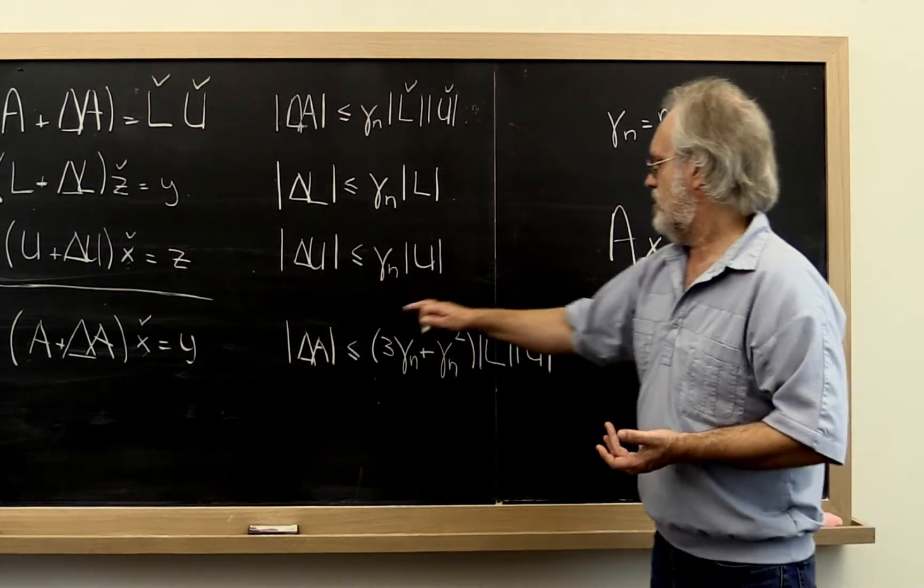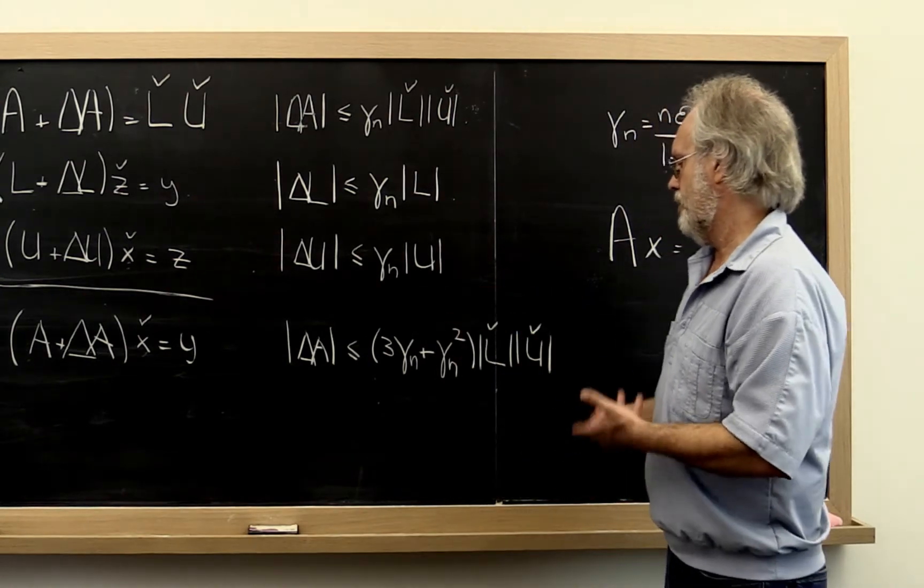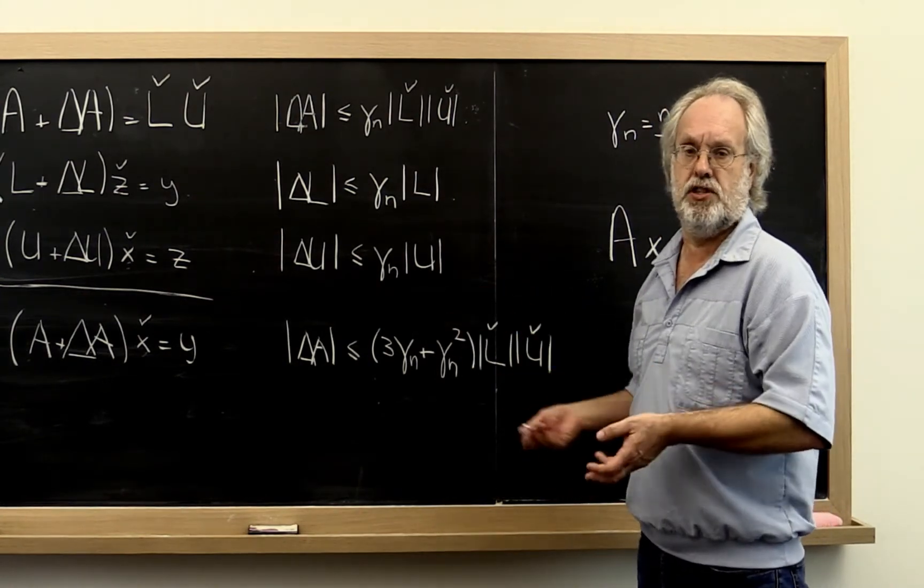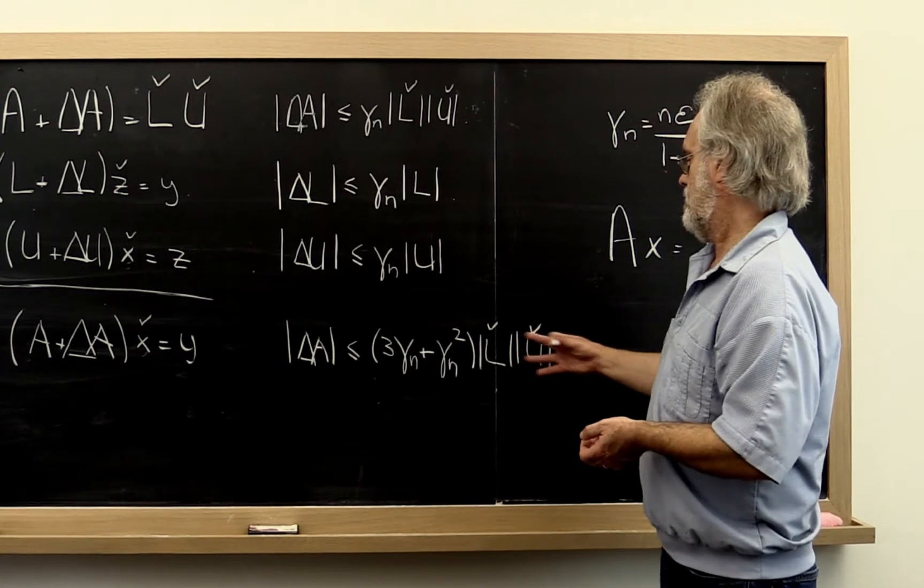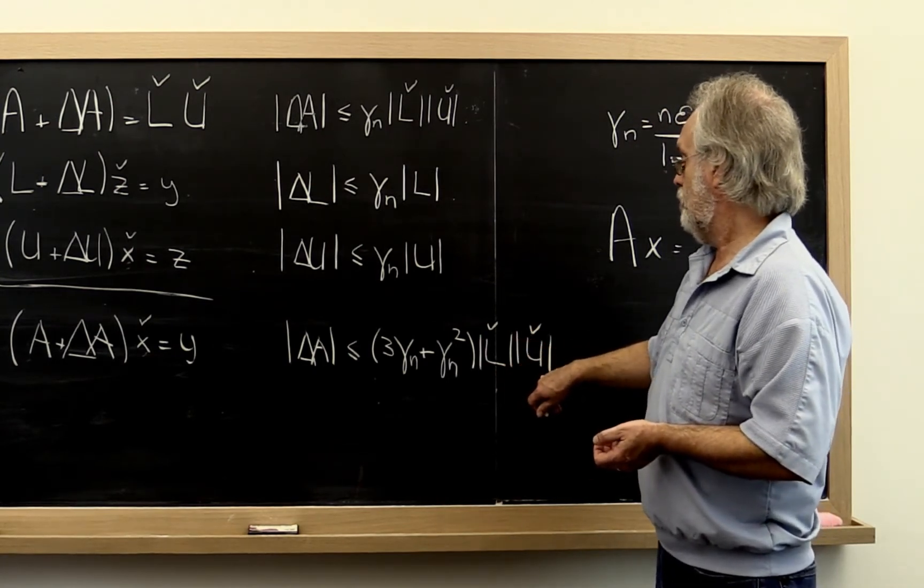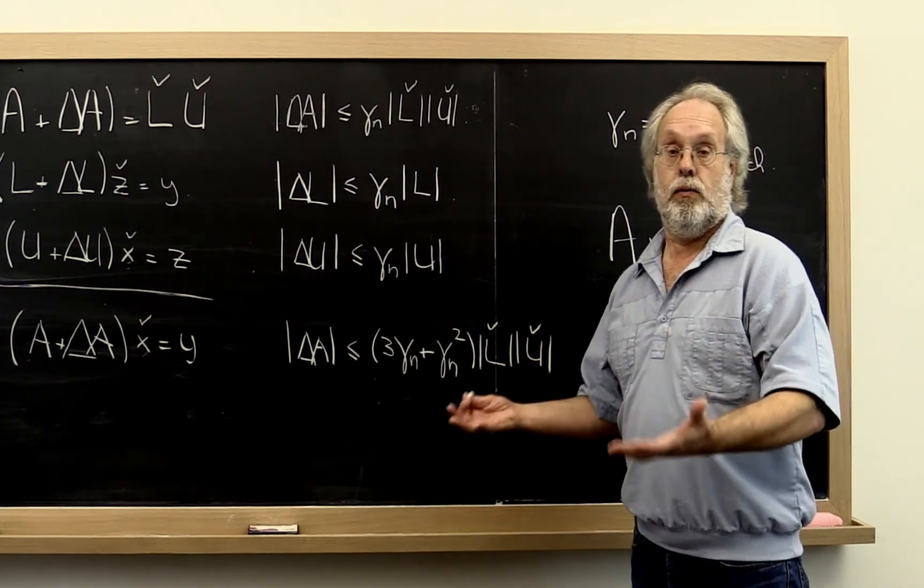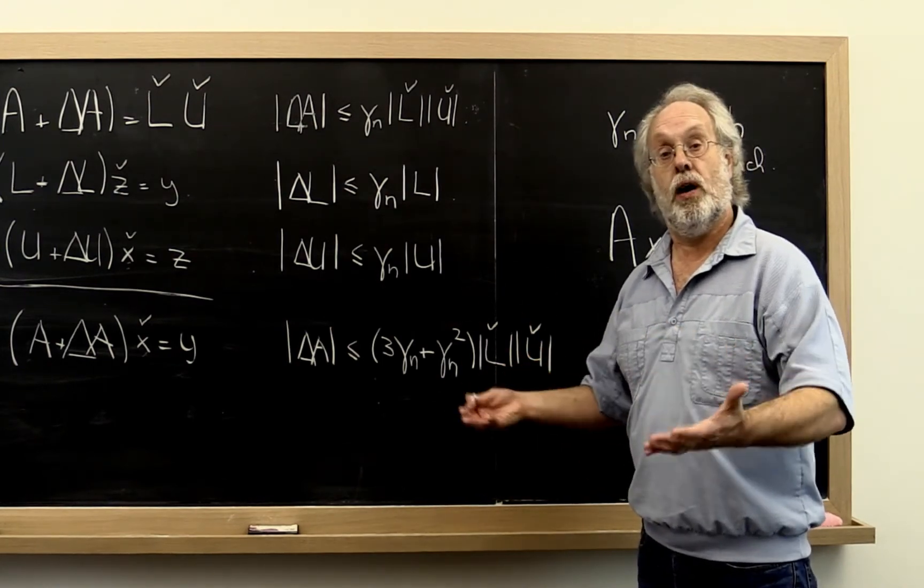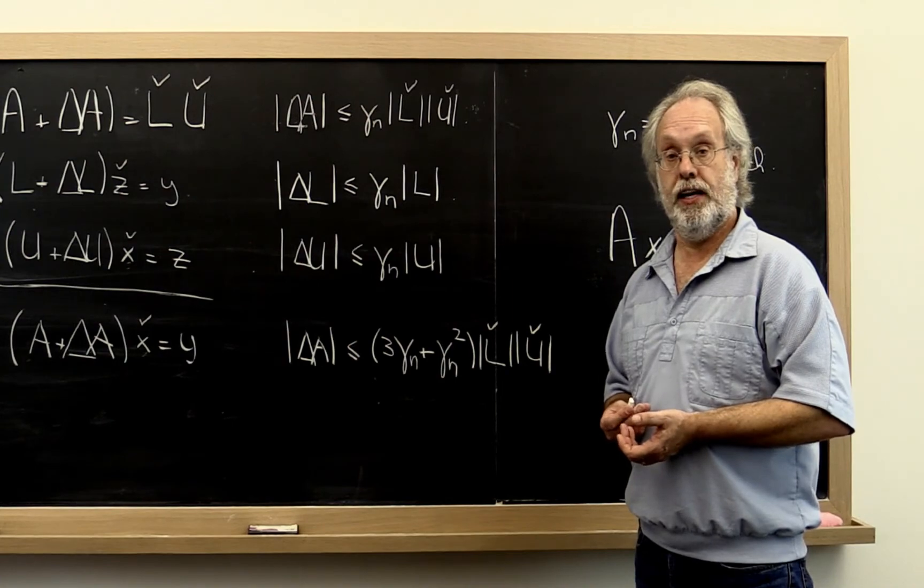Then you notice that this is roughly something that involves a constant times n times the machine epsilon, multiplying the computed L times the computed U, except with element-wise absolute values of the elements.